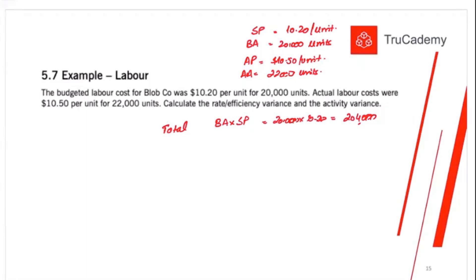My difference has come out as 27,000. No, budgeted activity is 20,000 per unit at 10.20. So 204,000.